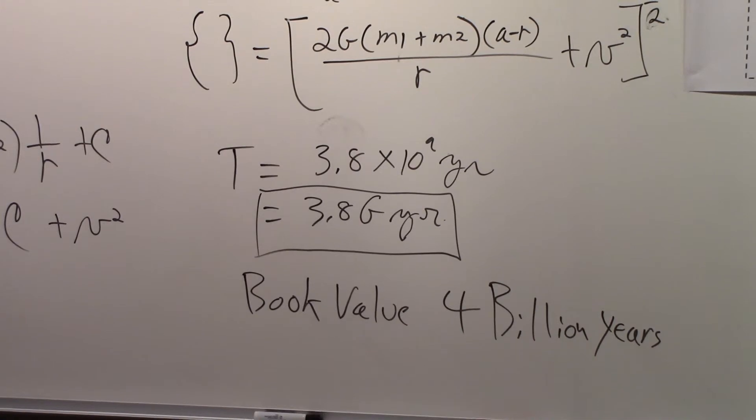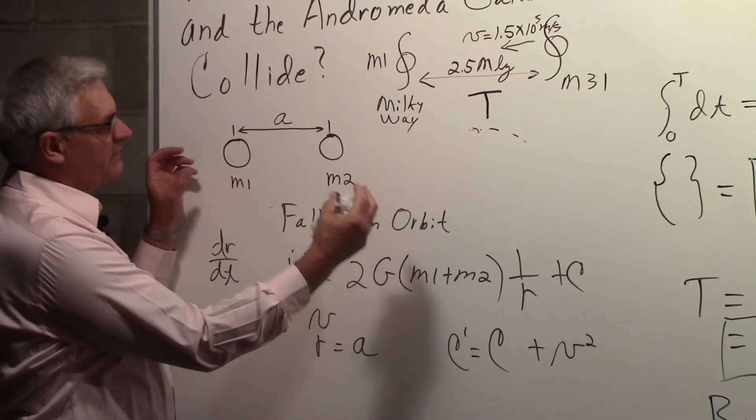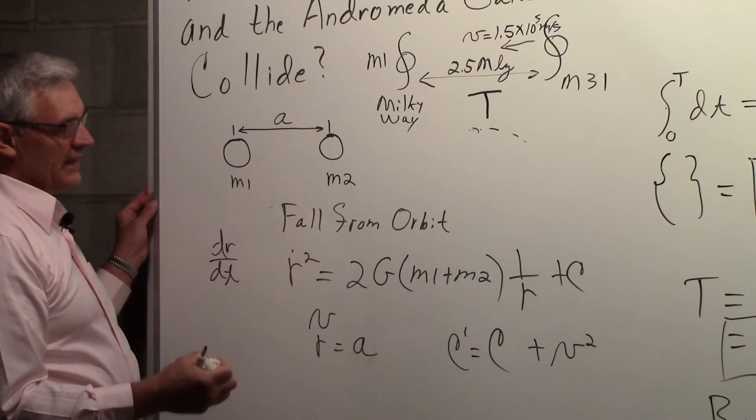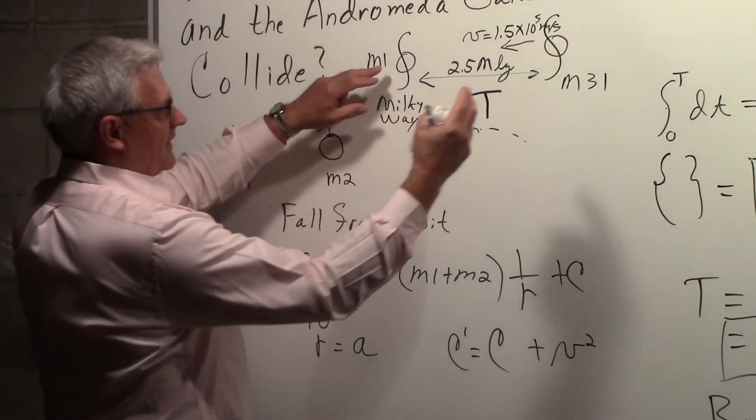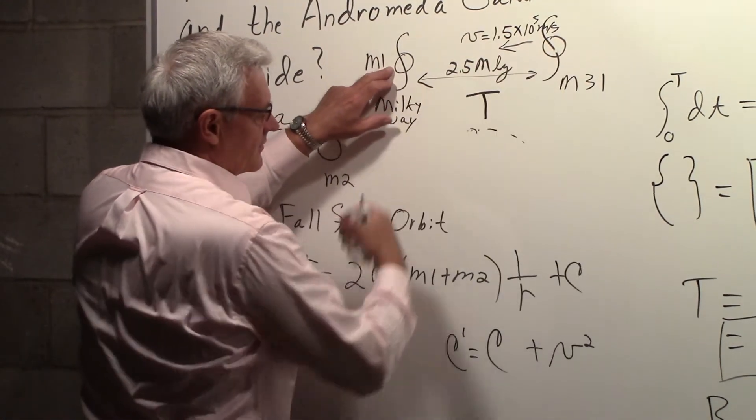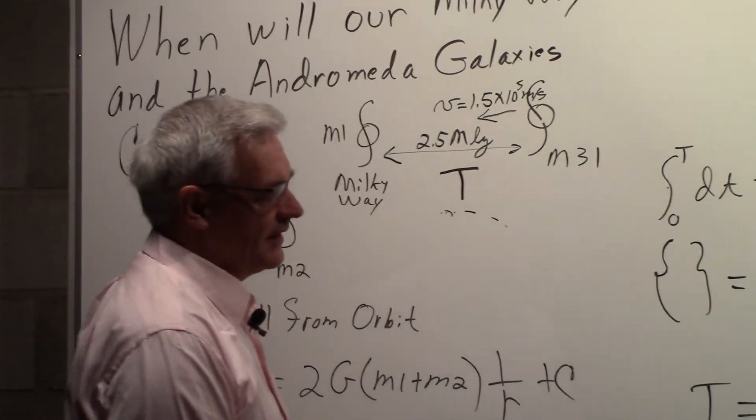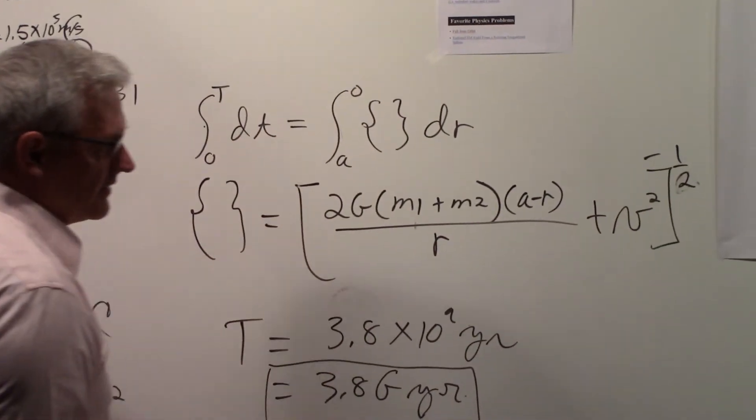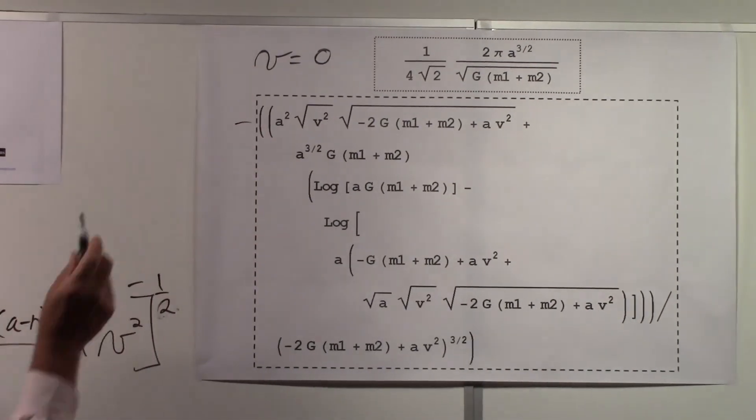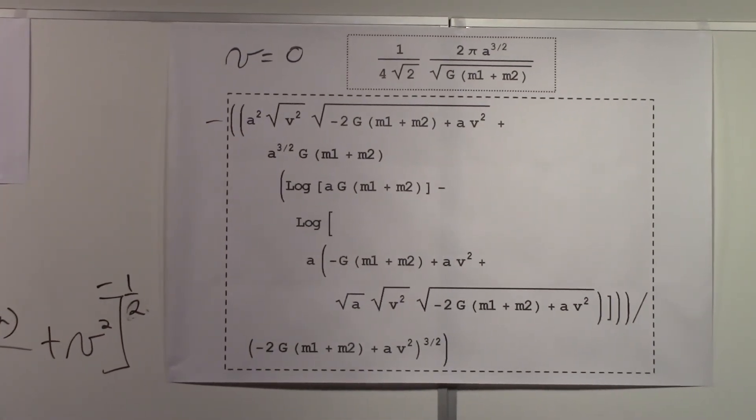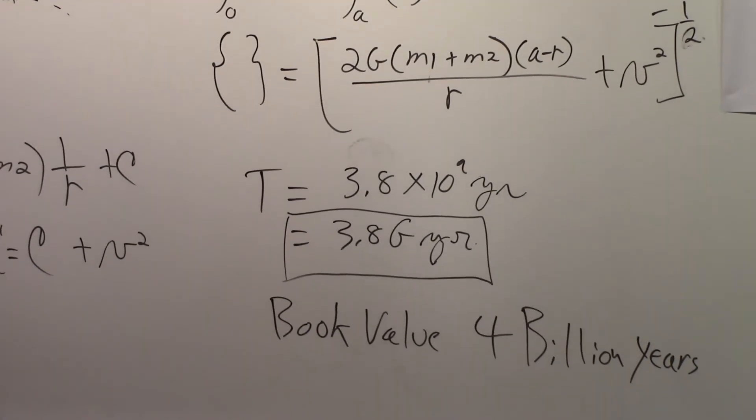So again, we started out with the simple example where we have these two masses. They're not moving with respect to one another. We release them, they come together. We figure out what that time was. And then I explained that that result, which was too high of a number, the reason for that was we didn't include the fact that M31 is actually moving towards the Milky Way. So when we include that velocity, it's something that we now have to carry when we do the integration that makes the integration more complicated, results in something that looks like that. When you plug the numbers into this expression, you wind up with 3.8 billion years.